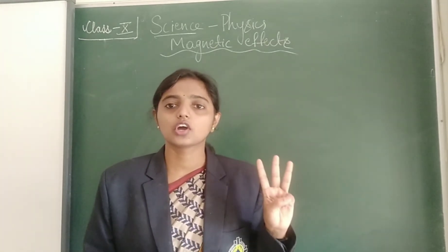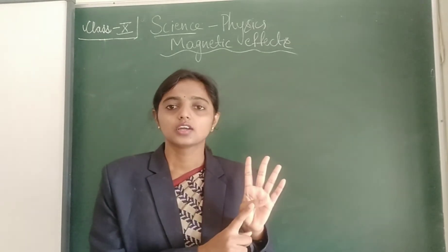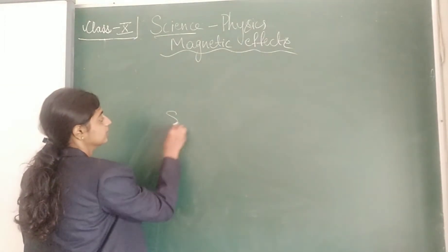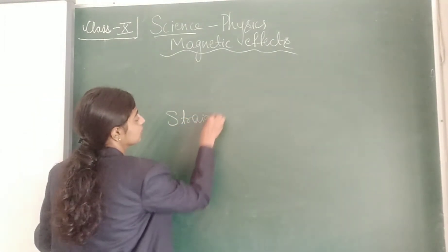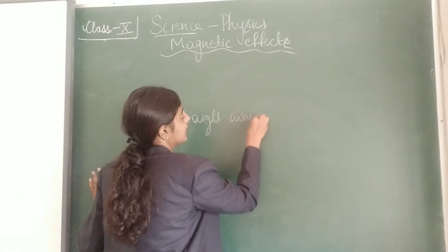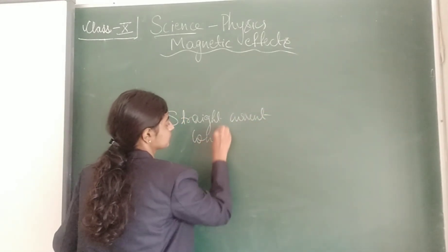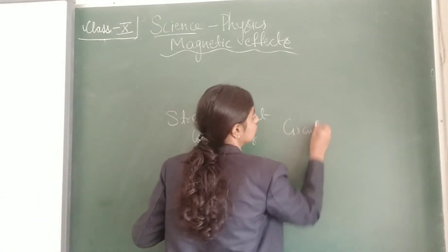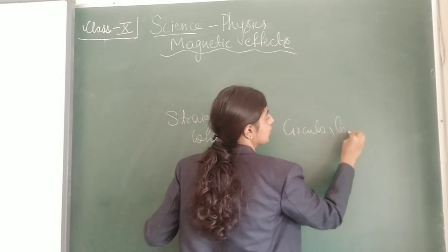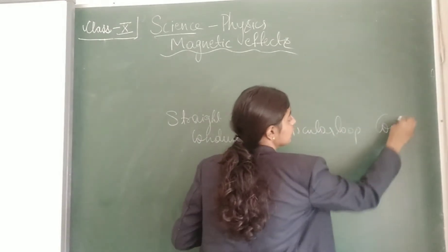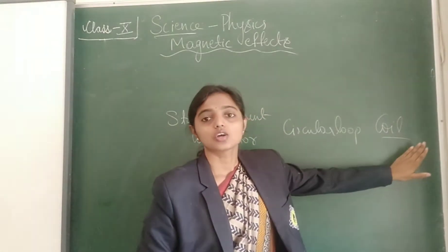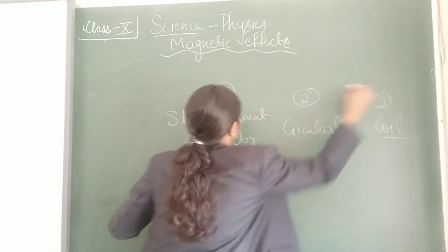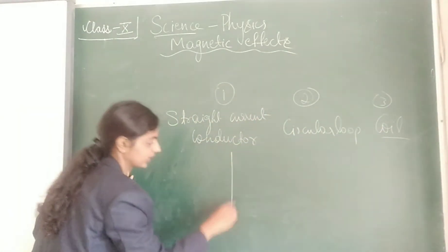Remember all three are important: magnetic field lines with a straight current-carrying conductor, circular loop, and a coil named as solenoid. For all three, we should learn how to use them. A straight conductor is like our copper wire, and if you bend it we get a circular loop.